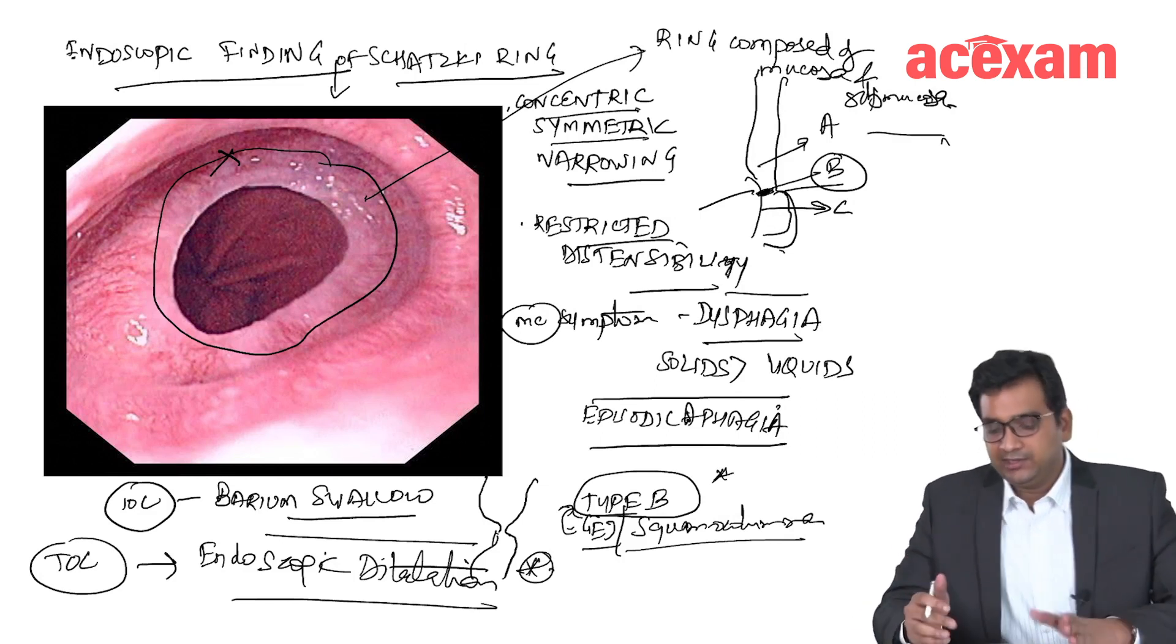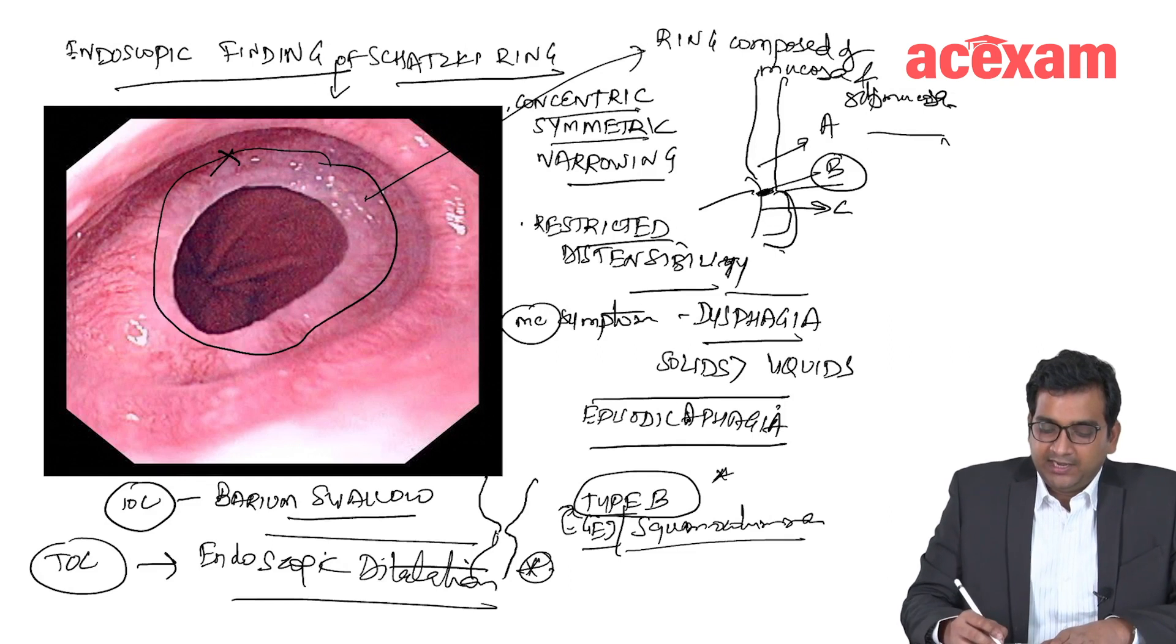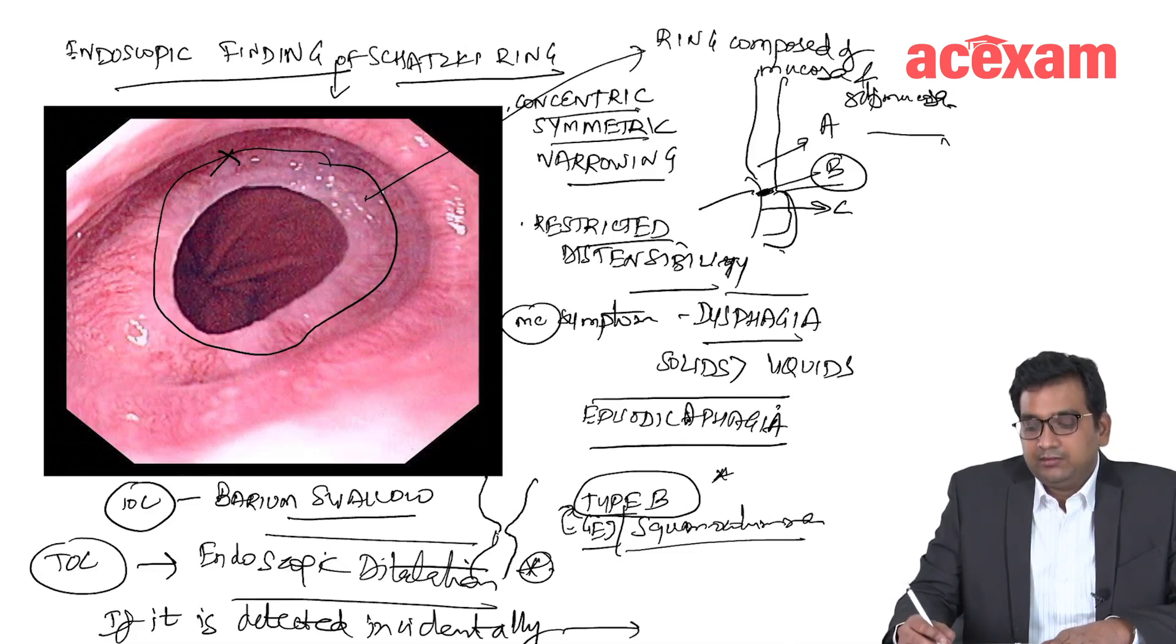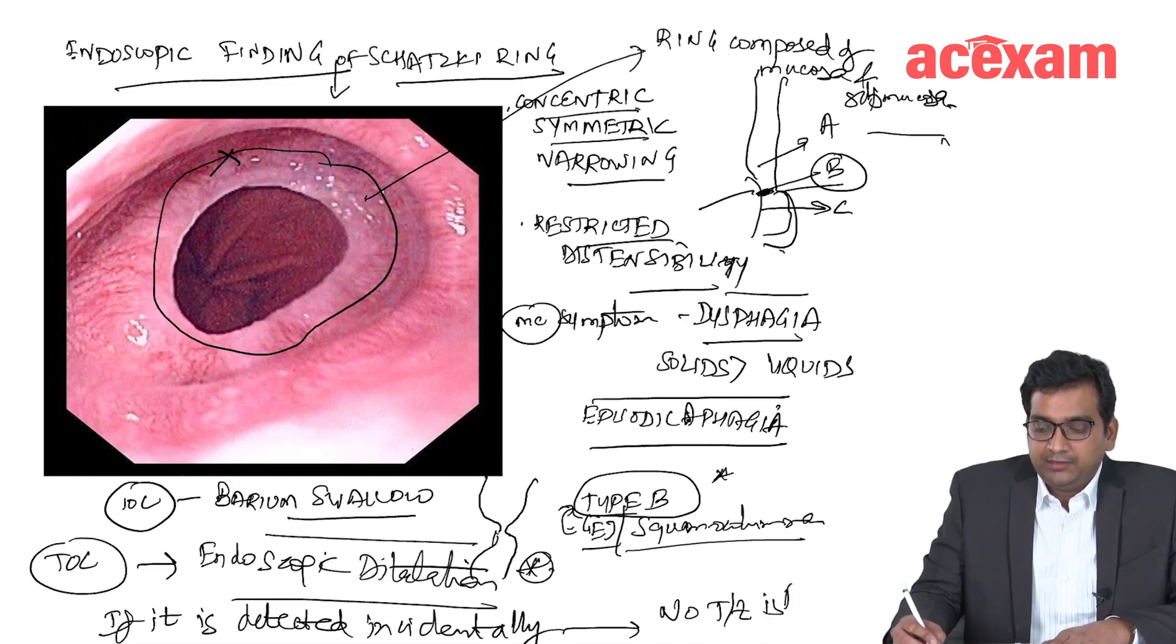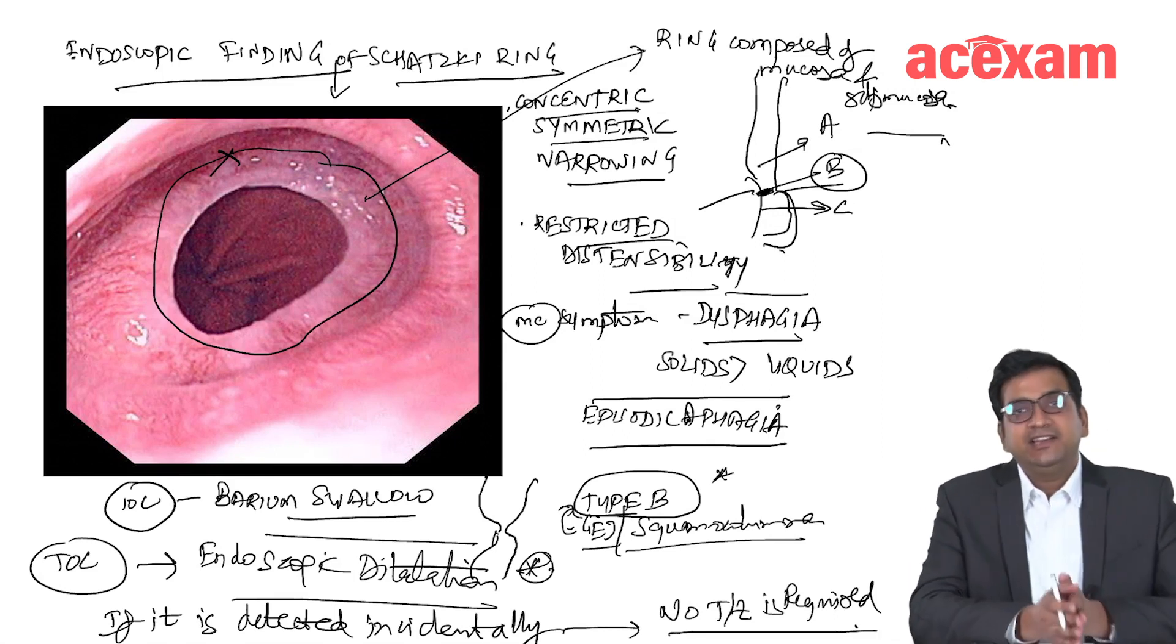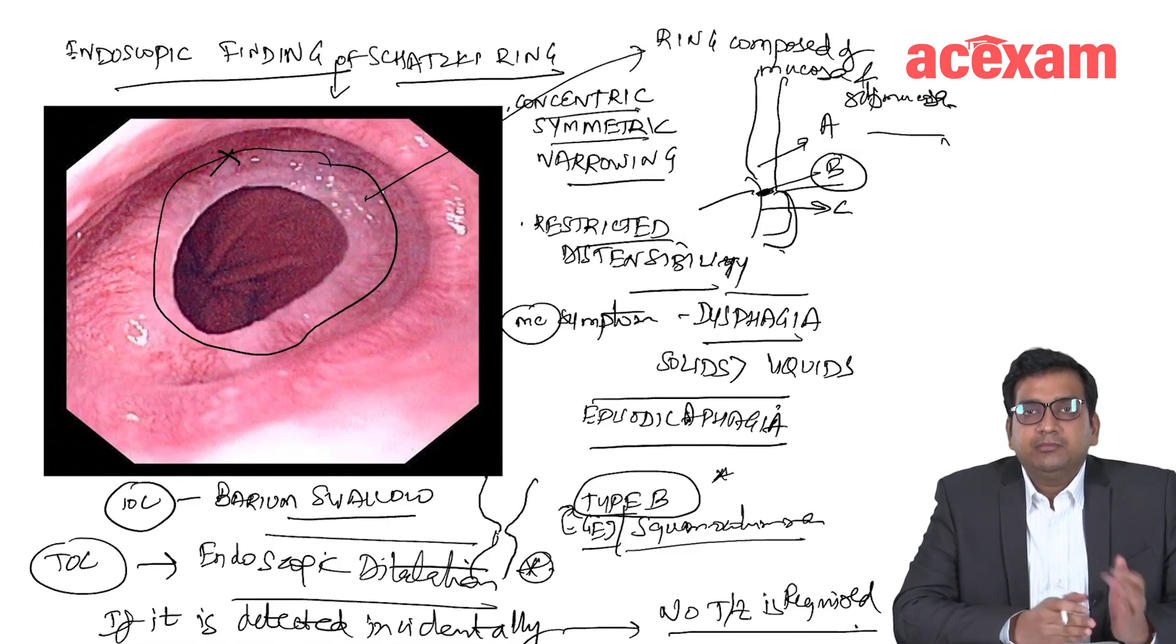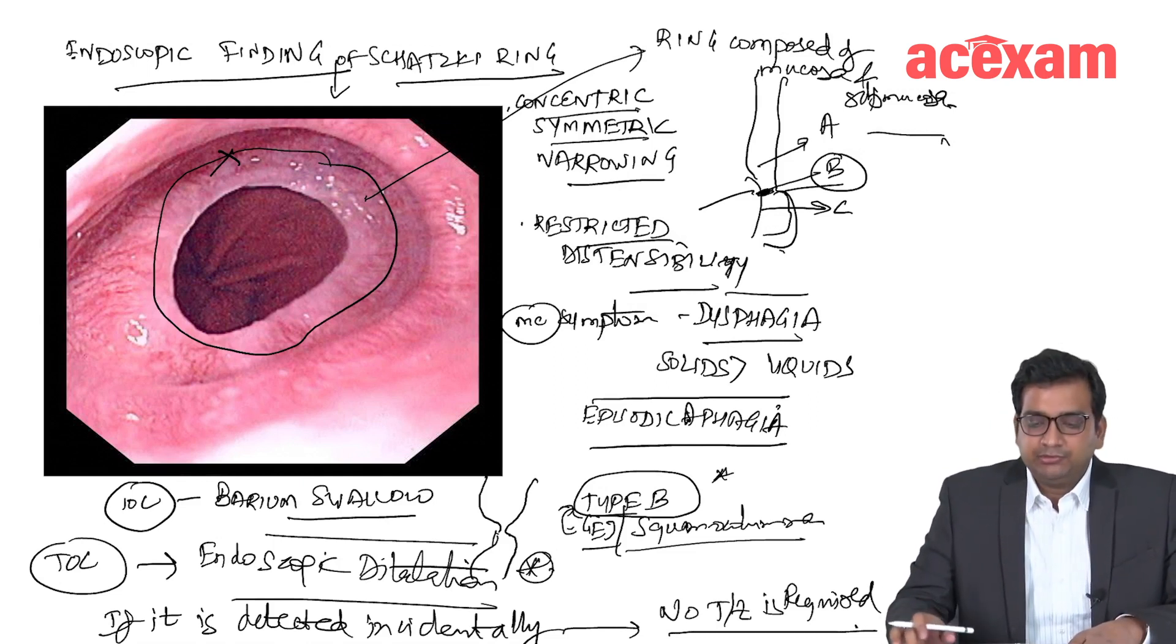Treatment of choice is endoscopic dilatation. And if it is detected incidentally, then no treatment is required. If it is detected incidentally, then there is no treatment that is required. If there is some dysphagia to solids, we will go for endoscopic dilatation. That is about Schatzky ring.